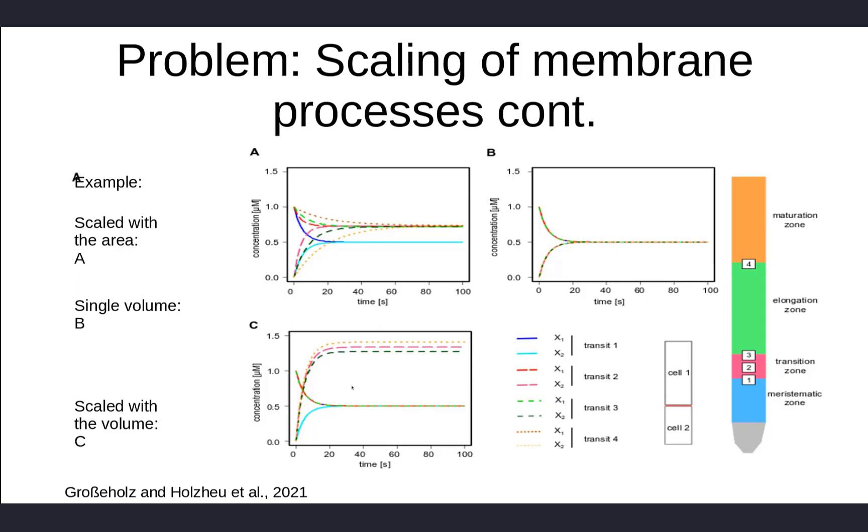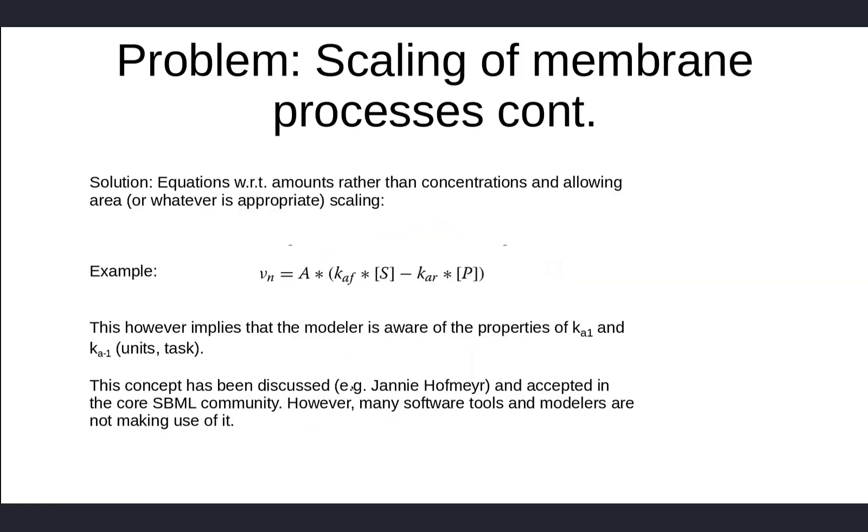It's better to really think about how you would scale such a transport process. In many cases it should be the area rather than a volume ratio that scales the transport process. However, in principle the software can't know beforehand what would be the correct scaling. That's why some years ago the SBML community, after discussions with Jannie Hofmeyr who published a paper about that, decided that transport processes should be assumed to be particles per time rather than concentration per time.